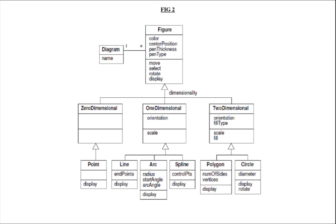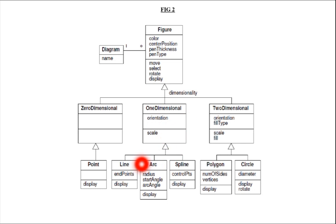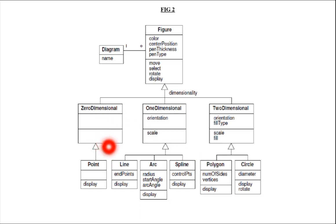Along with the common features of the figure, extra details like orientation, scaling, and fill can be added by the subclasses. One-dimensional is also a superclass. Its subclasses are line, arc, and spline — all one-dimensional figures. Point is a zero-dimensional figure and a subclass of the zero-dimensional superclass. Polygon and circle are subclasses of the two-dimensional superclass.